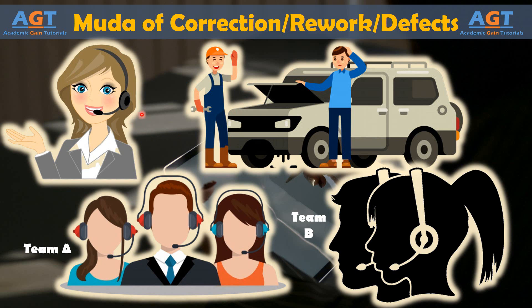One of the biggest problems with muda of correction is that a case can often be made that the processing is necessary. Perhaps Team B is not equipped to deal with single car incidents, so the work has to be rerouted if the claim is to be completed. But why not equip downline team members to handle any claim, or create a process for routing claims to the correct team without sending the work back to the original queue?